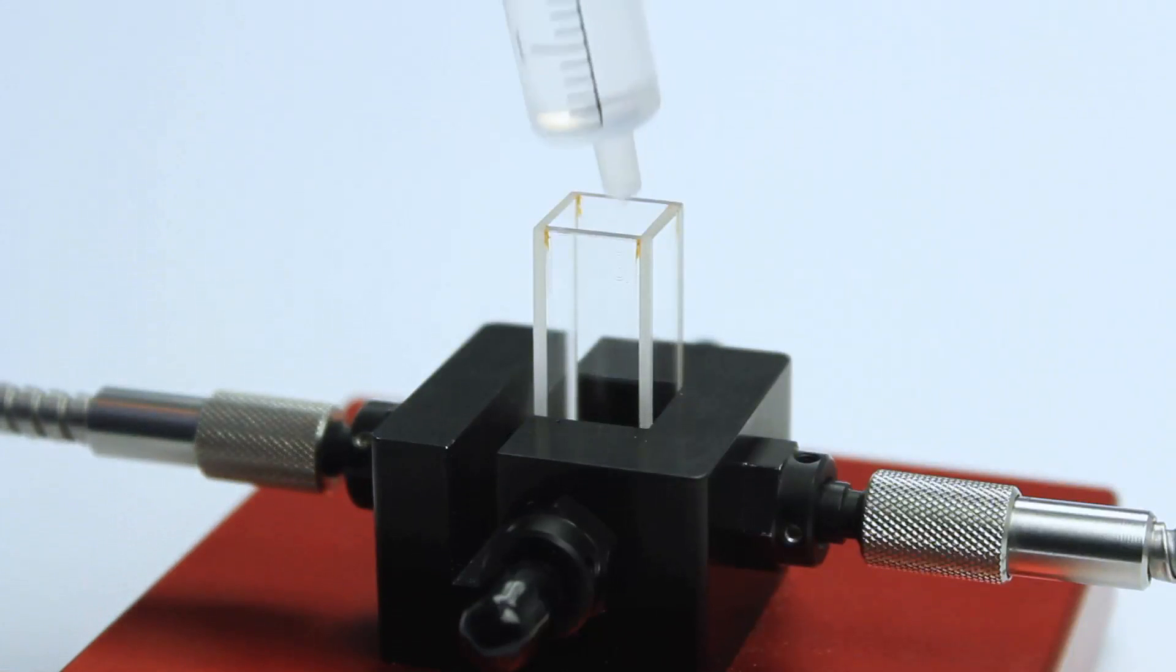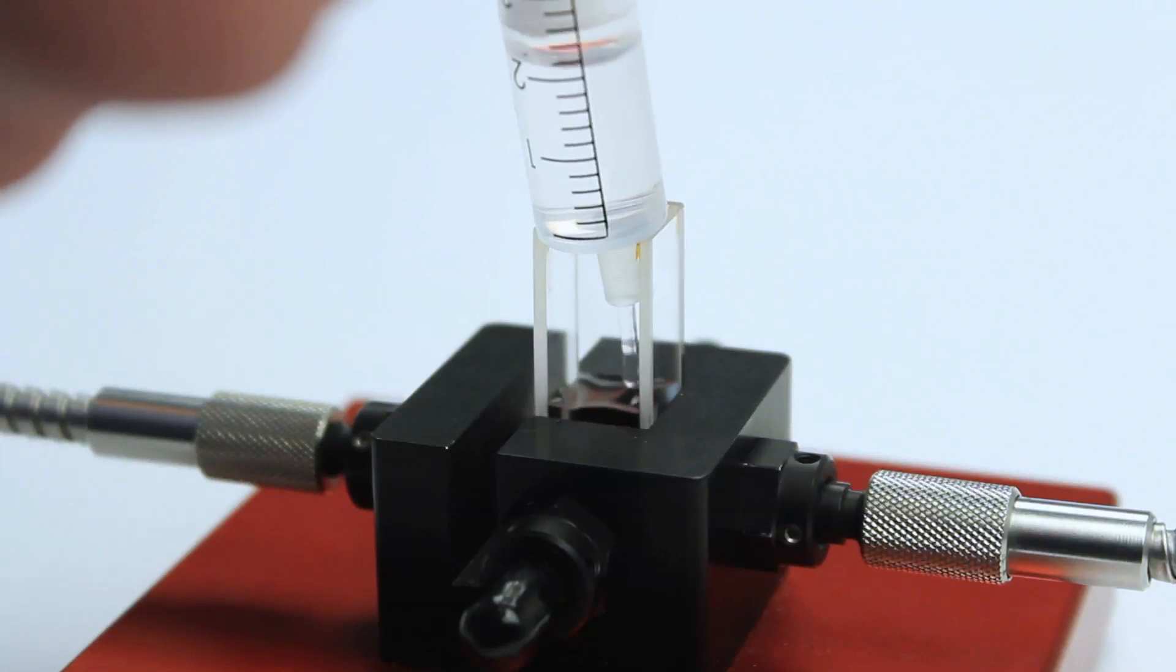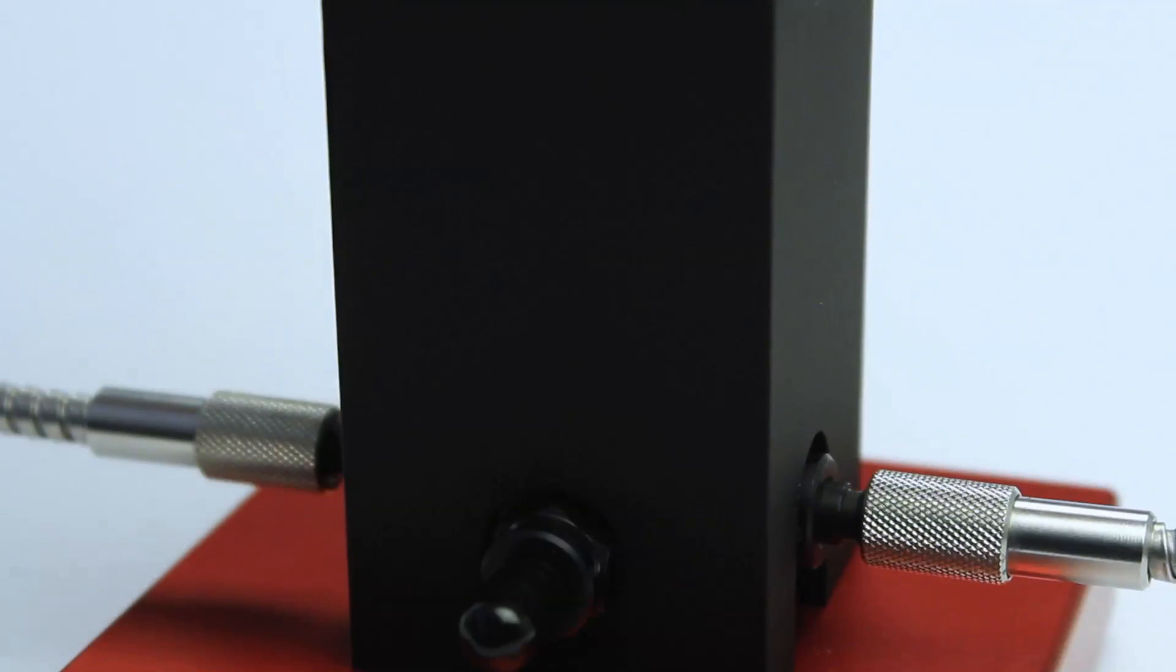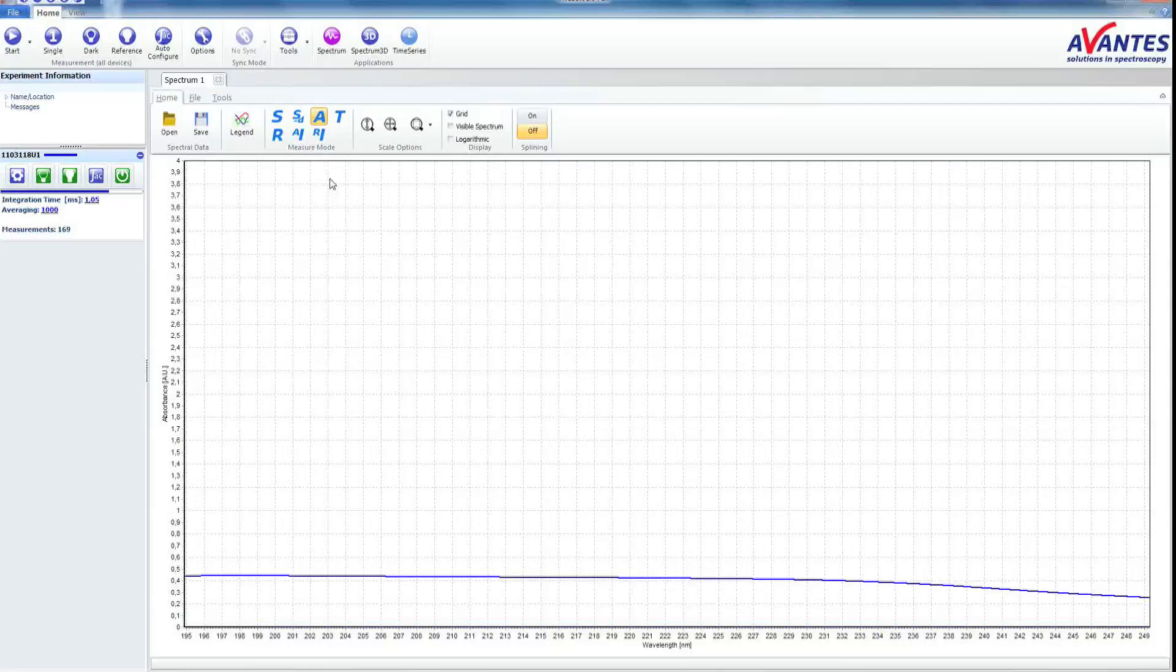Put your sample in the cuvette. You see the absorbance curve of the ethanol. You can also save this data.